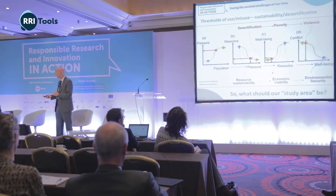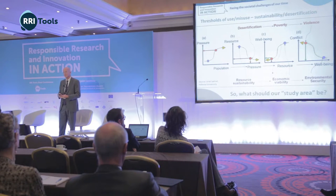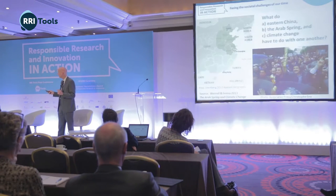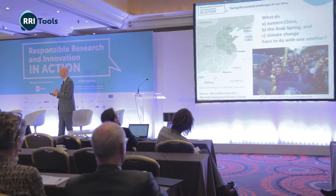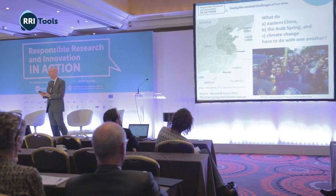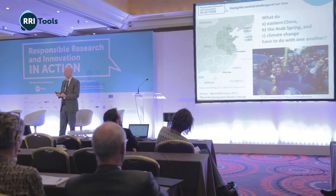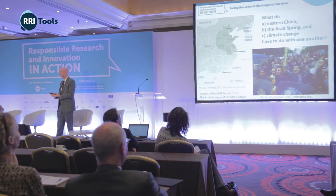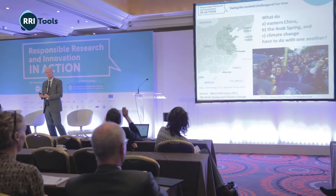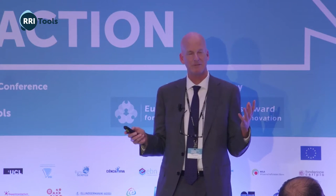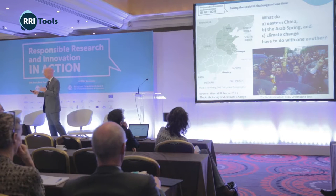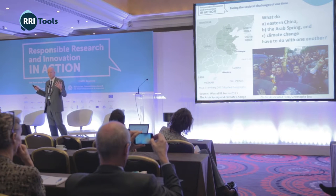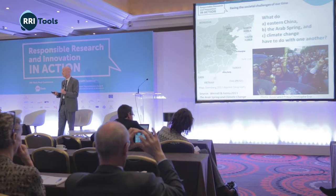The question becomes: where should the study area be? Where should we be focused? Almost every story you read about this is place-based, but is it really? What do eastern China, the Arab Spring, and climate change have to do with each other? What's the common element? It's the loaf of bread. From a climate change perspective, the availability of wheat and rising prices in the year before the Arab Spring were hit hard by climate change in different ways in different wheat-producing nations.